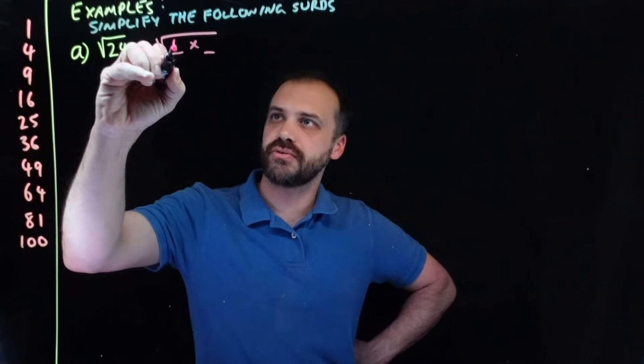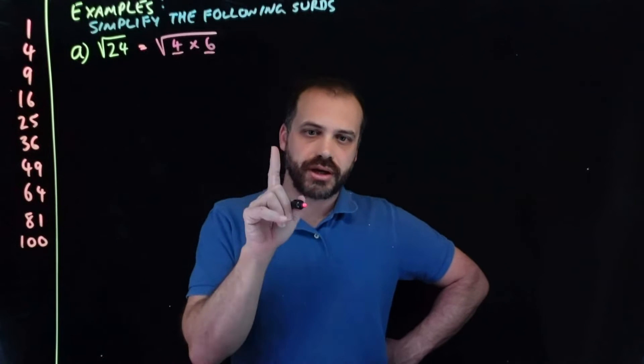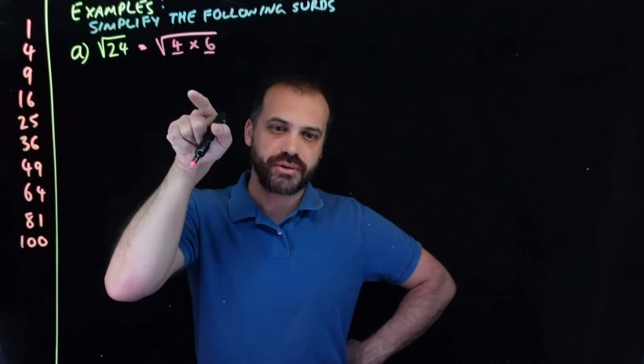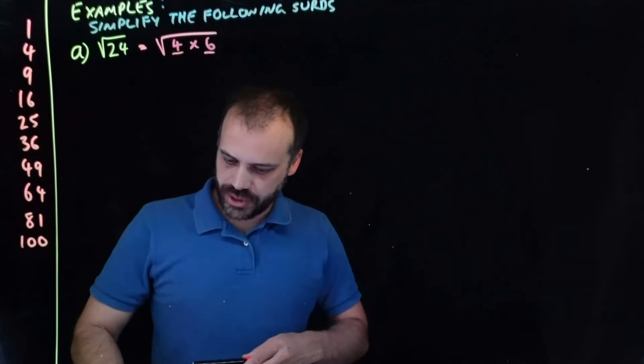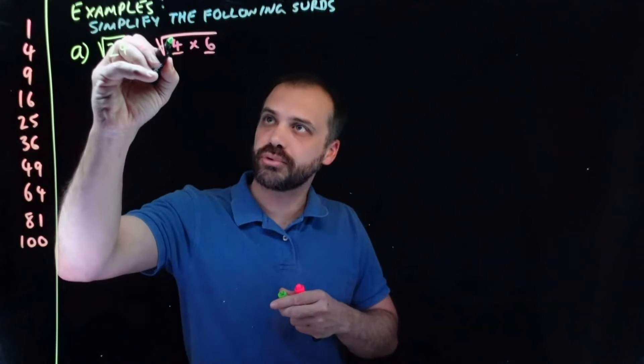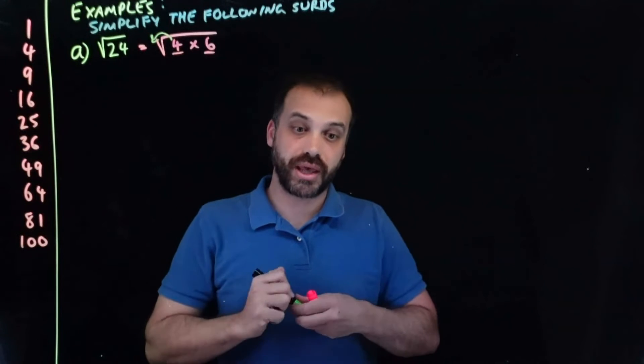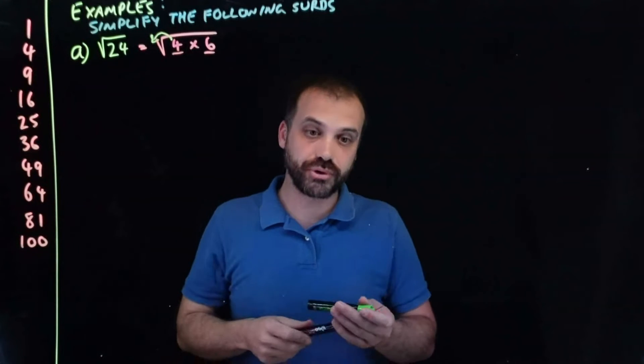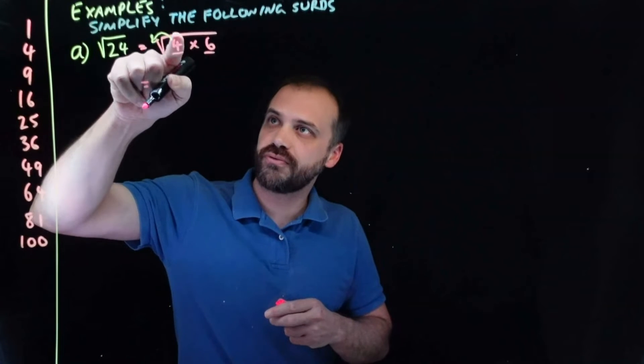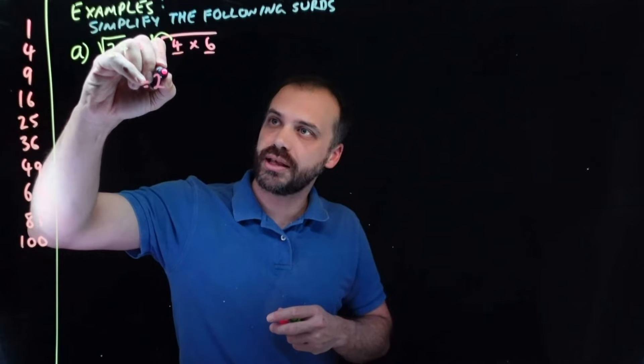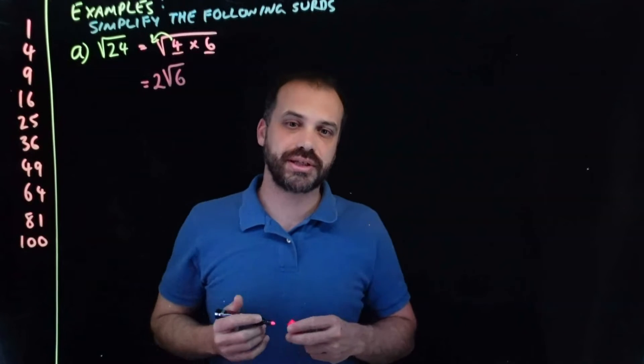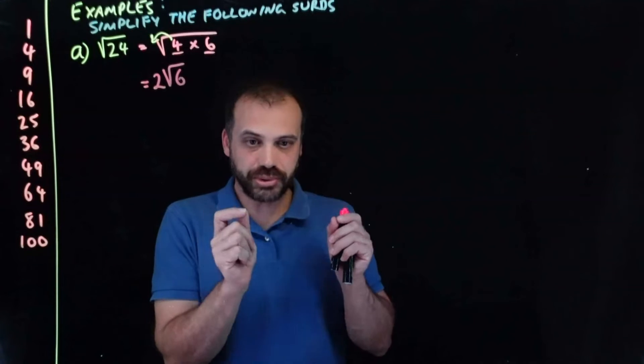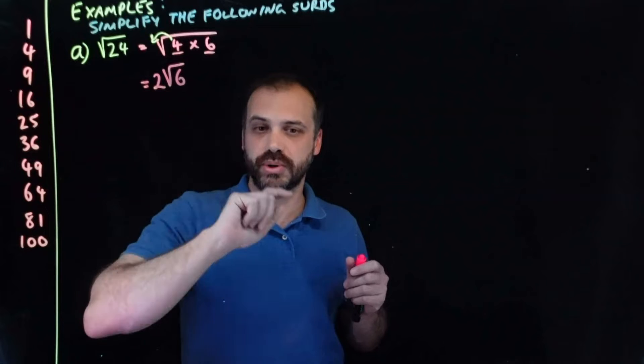Yes, I can. 24 is the same as 4 times 6. And now look at this 4. It's a square number, and it's inside of a square root. So, we can take that 4 and bring it outside of the square root. And when we do, we need to square root it. Because we're taking it out of the square root, so we have to take the square root of it. So the answer is, the square root of 4 is 2, so that comes on the outside. And then what's left over? The 6 is still inside the surd. So, the square root of 24, in its simplest surd form, is 2 square root 6.